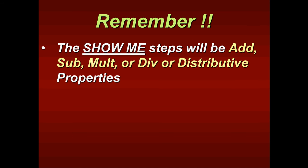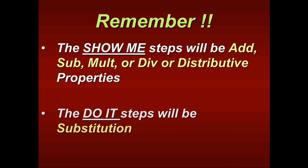The show me steps are the operations. You have to show that you're doing those operations. The do it steps means that after you show that you're going to multiply or add from both sides, you have to say that the next thing to do is to do it, which is the substitution step.